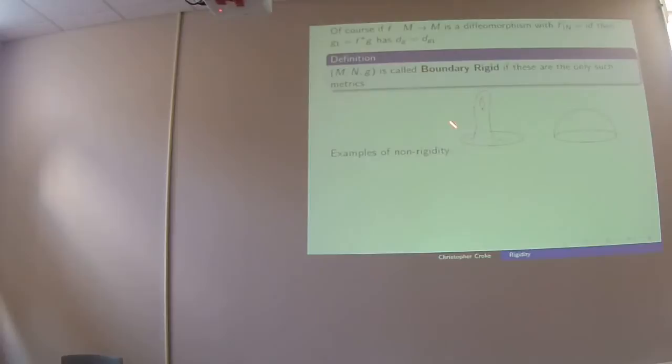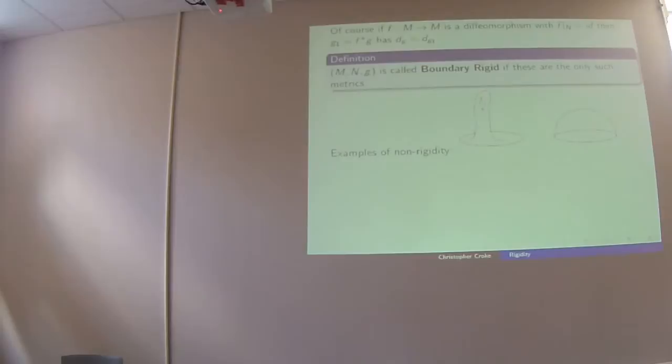If you look at this manifold — a surface in Euclidean 3-space — the distance between boundary points involves curves that never go up into the top part. So you can do anything you want up there: change the metric, put extra holes in it, change the topology, and you'll never see any distance change down below. So this manifold is clearly not boundary rigid.